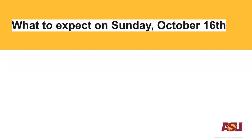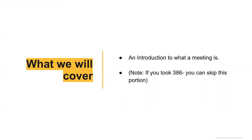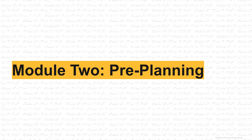What can you expect on Sunday? Two modules are going to open. Module one is going to be 'What is a meeting?' We're going to talk about an introduction to what a meeting is and what you're going to be planning. If you took 386 with me, you can skip this portion — I want to make sure people have an understanding of what a meeting is, who plans it, where it takes place, so they have that baseline level.